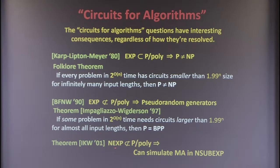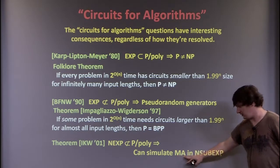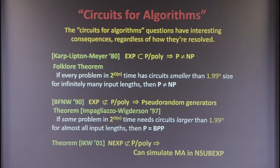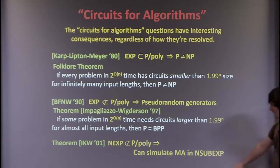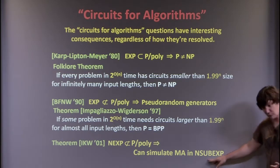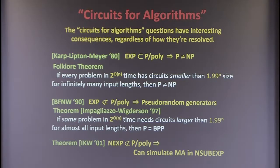Even proving NX is not in P/poly can get you some kind of derandomization — not necessarily for randomized computations by themselves, but for Merlin and Arthur protocols. Problems that can be verified using randomness, the randomized version of NP where Merlin gives a proof and Arthur tosses coins to verify. You can simulate Merlin-Arthur non-deterministically, removing the randomness at a cost of some sub-exponential running time.